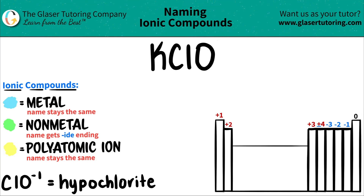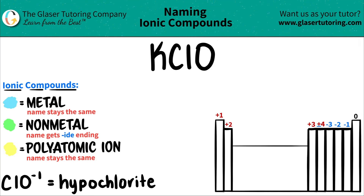Today we are going to be naming the ionic compound KClO. Here's a trick: if you see that you have a compound with three or more different elements, you know that you're dealing with at least one polyatomic ion.